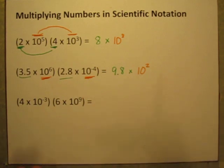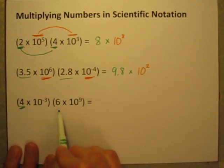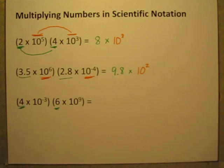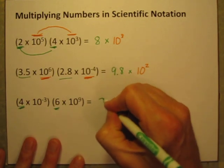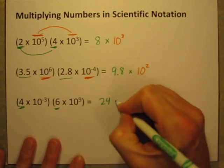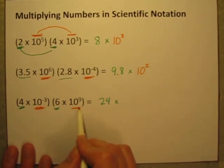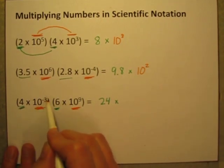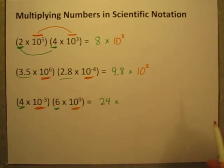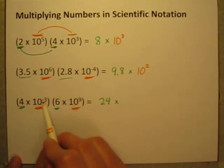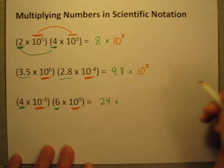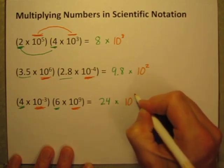Last one. Let's do it the same way. Let's do 4 times 6. 4 times 6 is 24 times. Now let's do the powers of 10. 10 to the negative 3rd times 10 to the 9th power. Let's add the exponents. Negative 3 plus 9 is 6. So this is 10 to the 6th power.